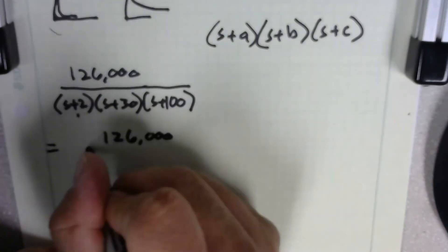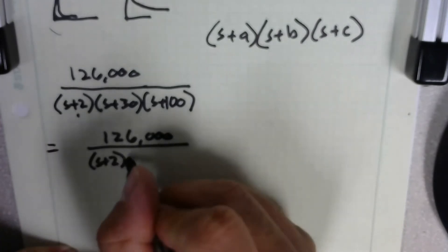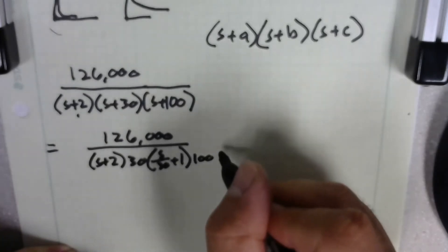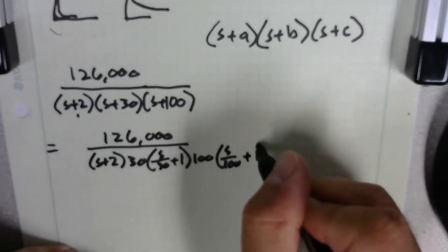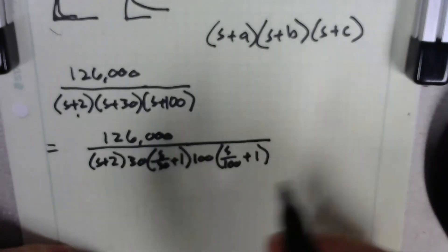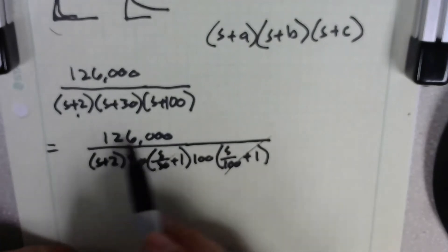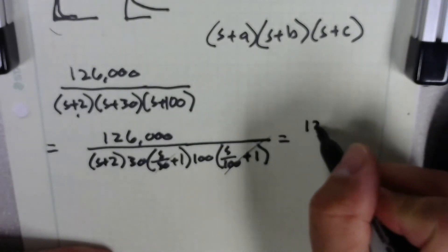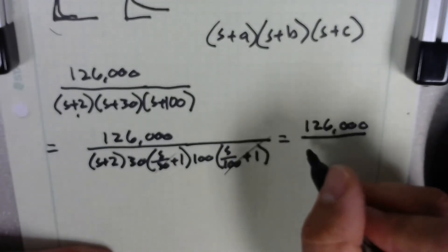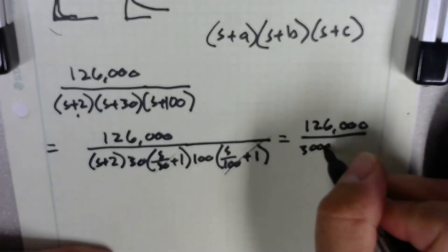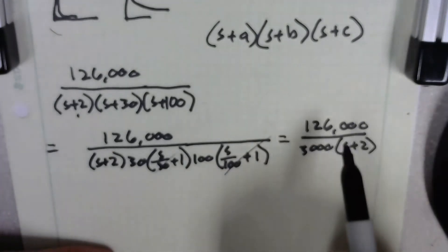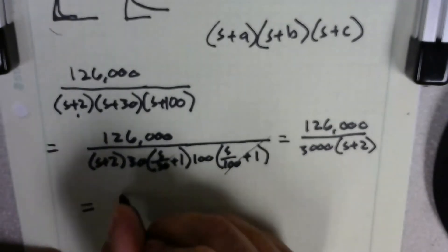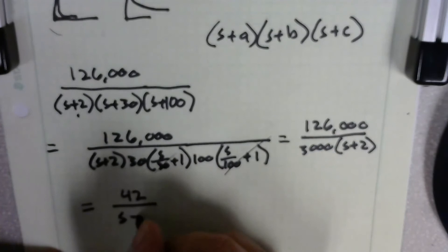All we're going to do is - let's just rewrite the equation: 126,000, and we're going to leave our s plus 2, but we're going to take out the 30 and that would actually leave us s over 30 plus 1, and we're going to take out the 100 and it's going to leave us s over 100 plus 1. These are the poles that we're going to get rid of, but we're going to keep these magnitudes to help divide through this thing so that we can have this approximation work. And so what we're left with is 126,000, that's a big number, divided by 30 times 100, which is 3,000, over s plus 2. So we just need to figure out what 126,000 divided by 3,000 is. Punch it into the calculator and, oh, would you look at that. What we get is 42 over s plus 2. Funny how that works out, isn't it?